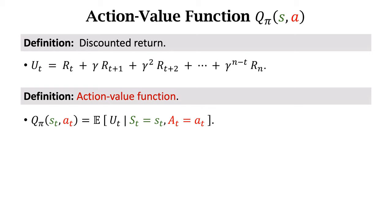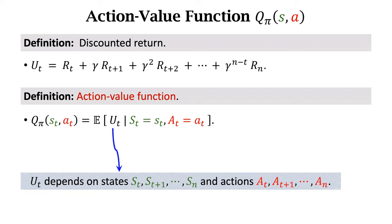The expectation of return UT eliminates the randomness in UT. The randomness in UT is from all the states and actions since time t.